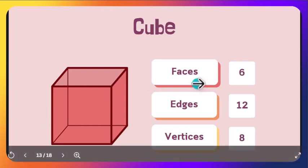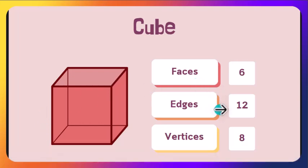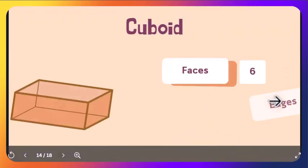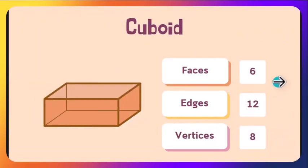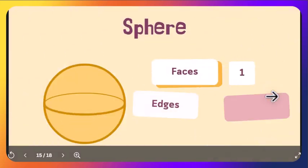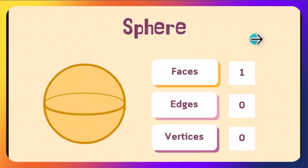Now let's see the properties of a cube. A cube has 6 faces, 12 edges, and 8 vertices. A cuboid is the same as a cube, but the only difference is the length of two parallel sides. It also has 6 faces, 12 edges, and 8 vertices.